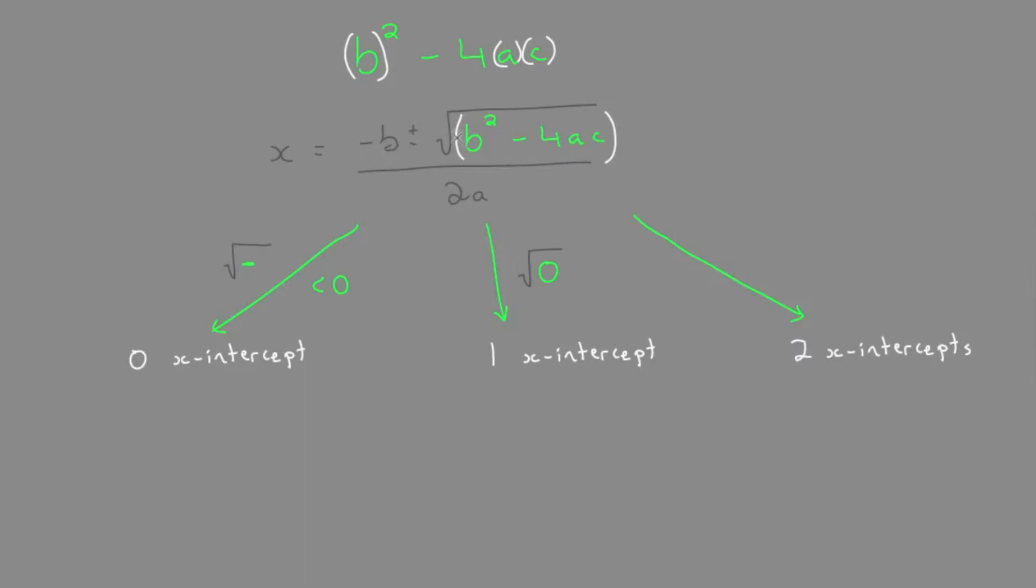And then we would do another one subtracting the root of zero. But you would get the same thing. You just have one answer. It would just be negative b over 2a. And that means we'd have one x-intercept.